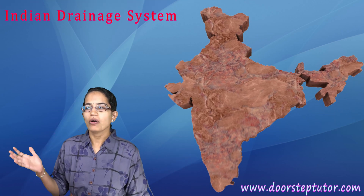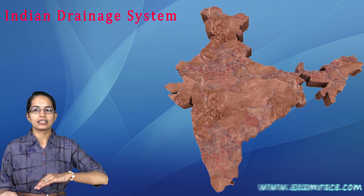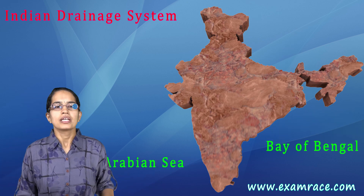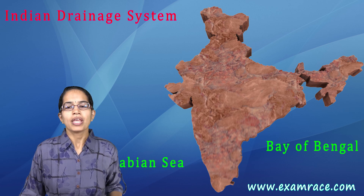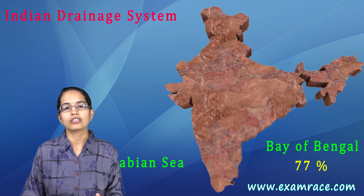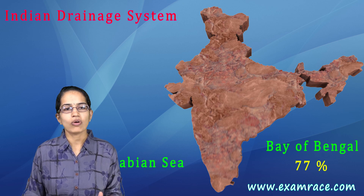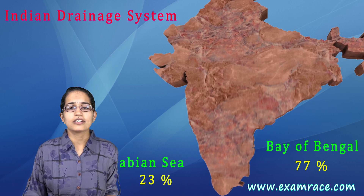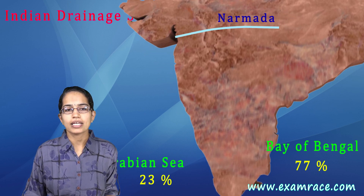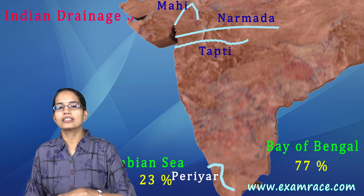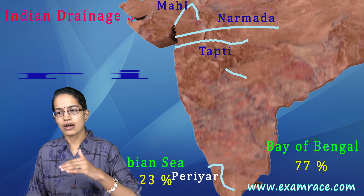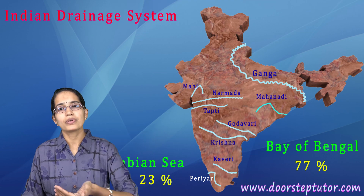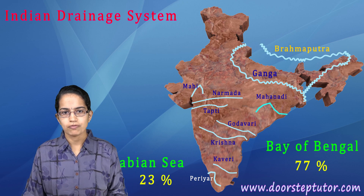The drainage system in India can be demarcated as either Arabian Sea drainage or Bay of Bengal drainage. 77 percent of the drainage falls into the Bay of Bengal and only 23 percent into the Arabian Sea. Rivers draining into the Arabian Sea include Narmada, Mahi, Tapti, and Periyar, while rivers like Godavari, Krishna, Kaveri, Ganga, and Brahmaputra all flow into the Bay of Bengal.